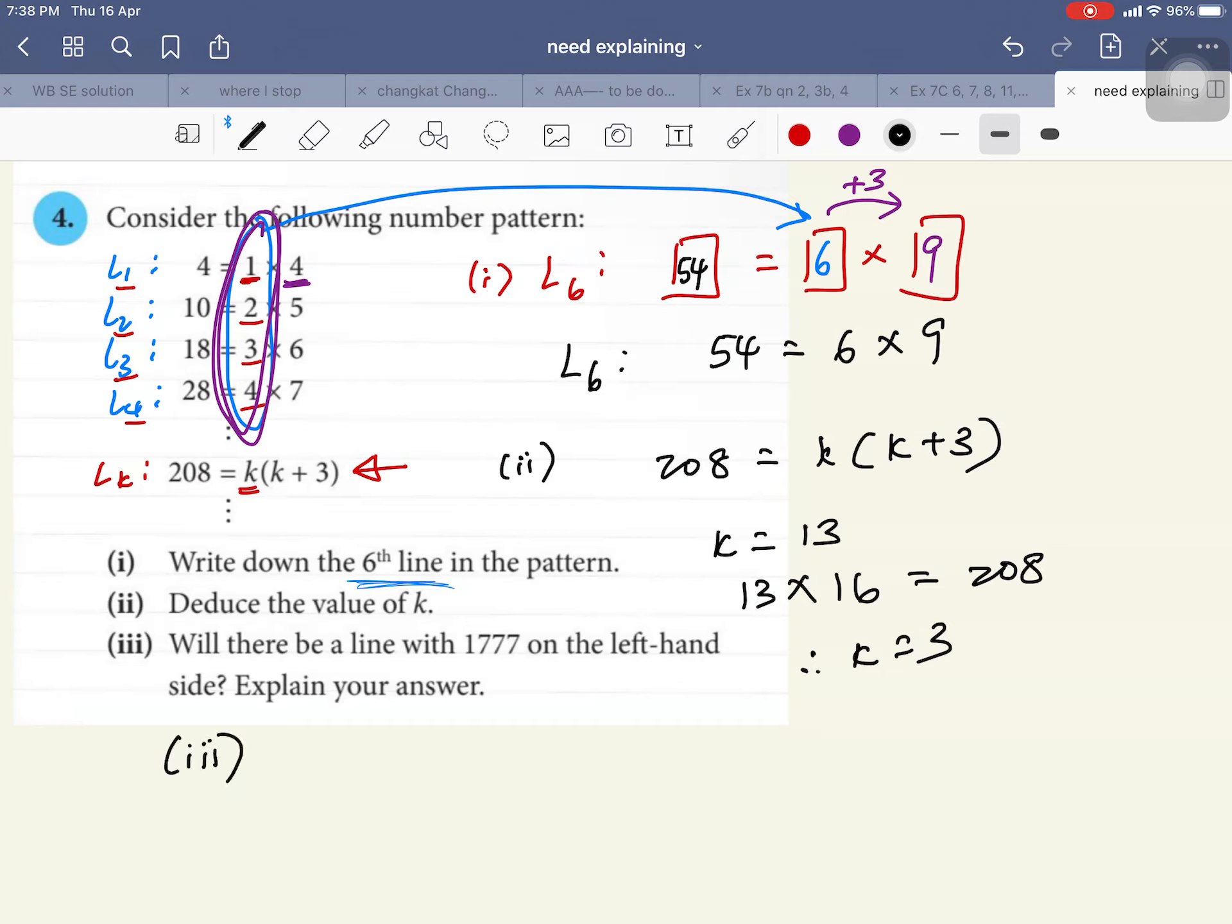Now, part 3. Will there be a line with 1777 on the left side? So, I need to observe the left-hand side. Now, I will erase this first. So, it's easier for me to explain. Now, let's look at the left-hand side. I'm going to highlight it with yellow.